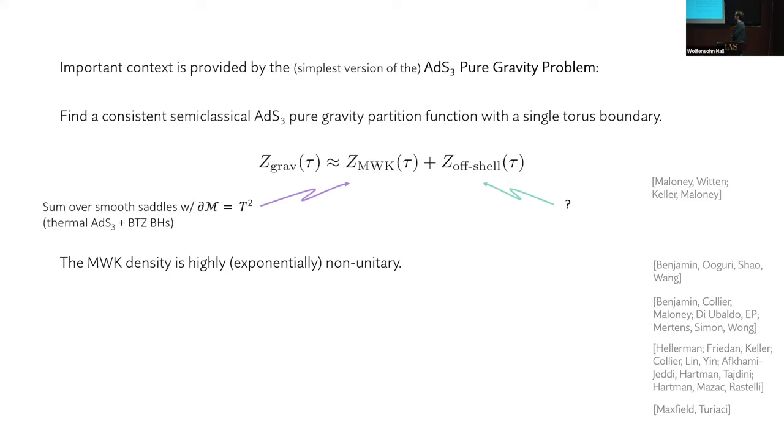So if we are to preserve the purity of the problem, that is to not add matter or light strings or something like this, there needs to be some other contribution to the partition function that I'm just going to call Z_offshell, because if we don't want to add matter, then it's some geometric thing which contributes to the path integral, or perhaps something non-geometric. But let's just call it Z_offshell, and we don't know much about what that is.